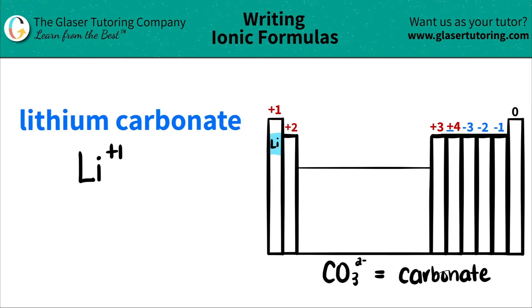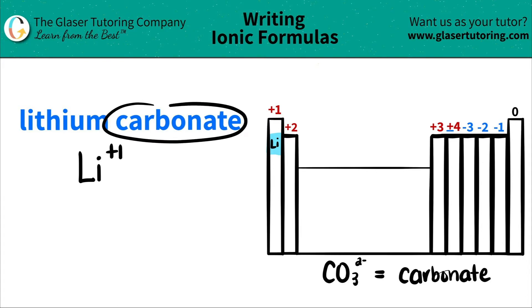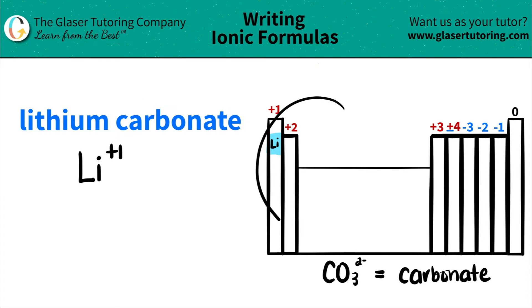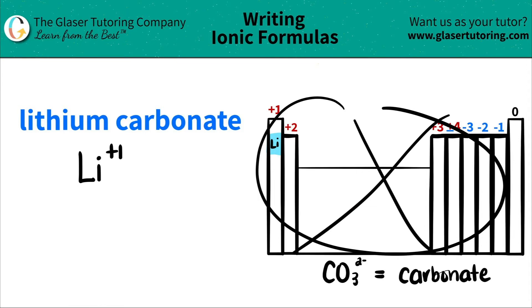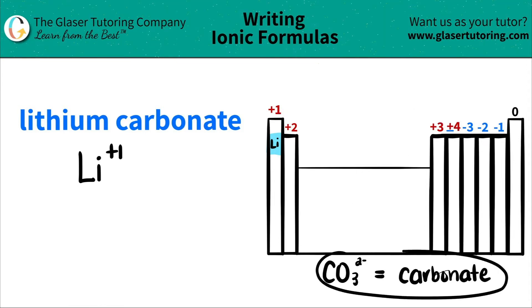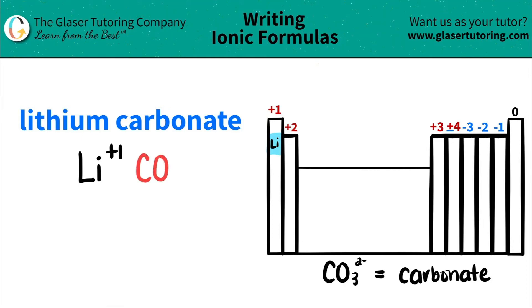We've got carbonate. Here's a trick: if you see an -ATE ending, that means it's a polyatomic ion. So carbonate has to be a polyatomic ion — it's got the -ATE ending, and polyatomic ions are never on the periodic table; we have to memorize them. Do whatever you've got to do — use flashcards, write it out — to remember that carbonate is always CO₃ with a negative two charge.